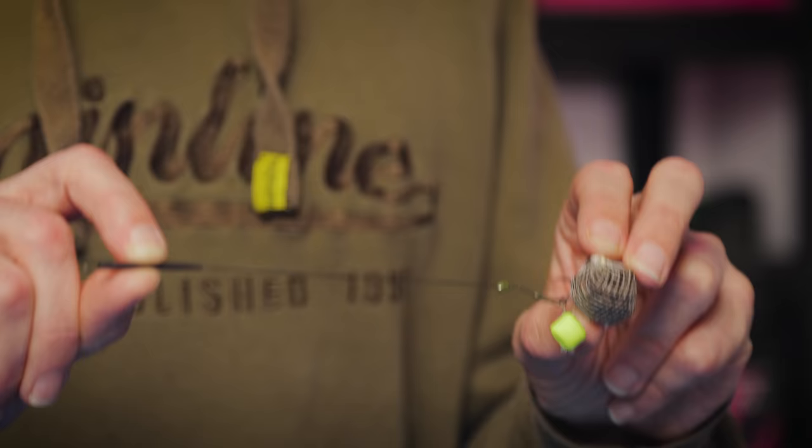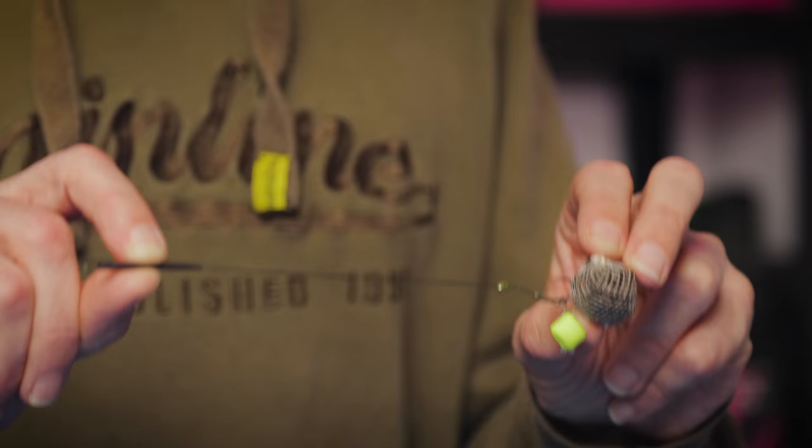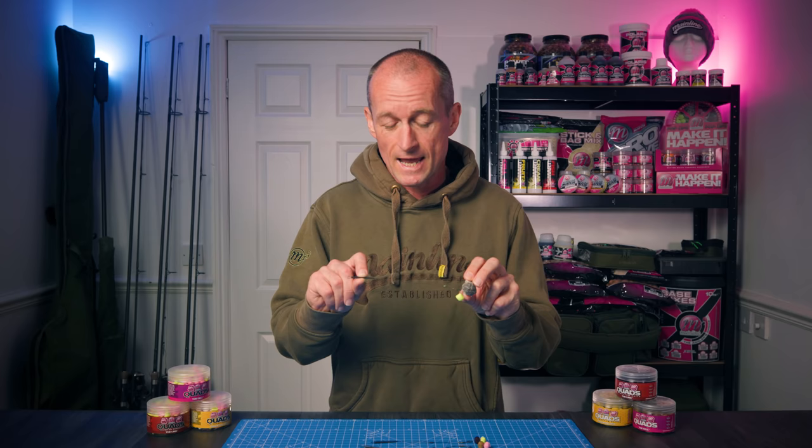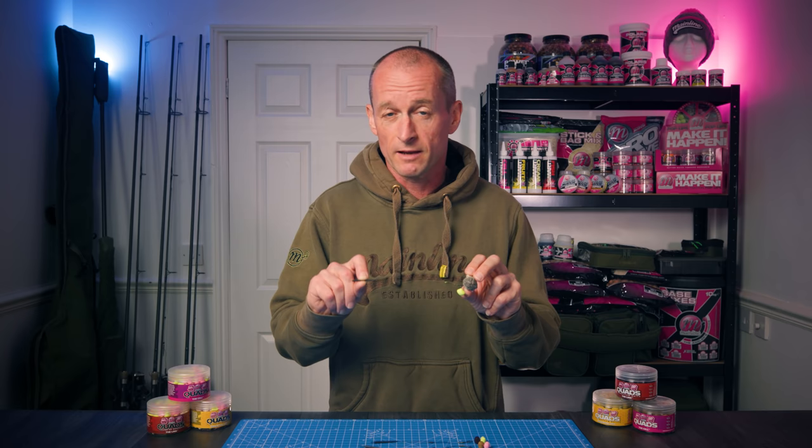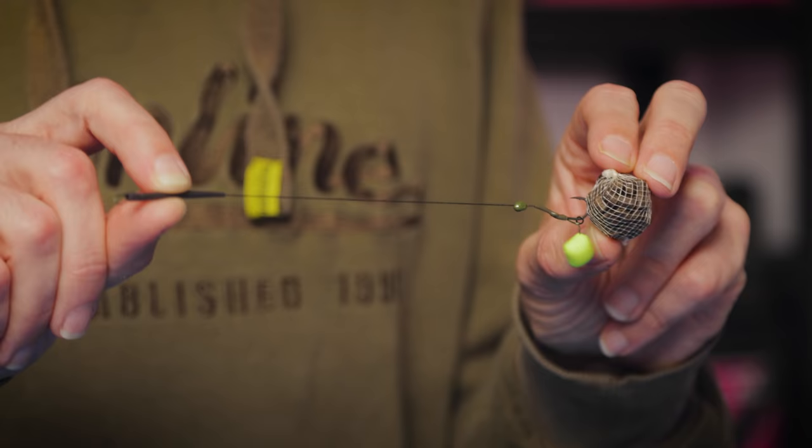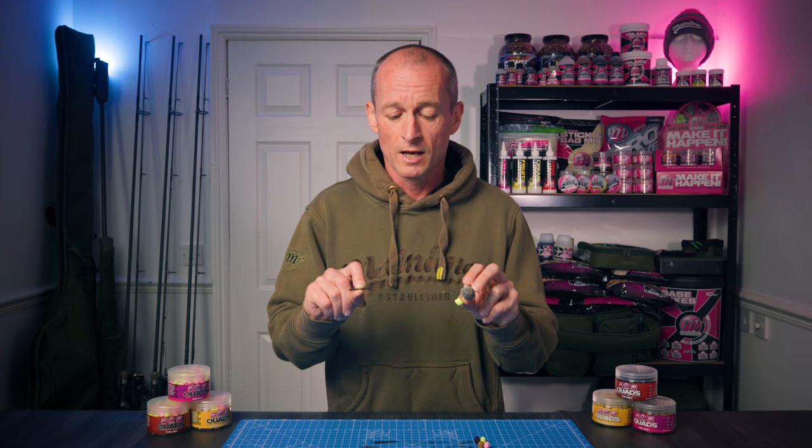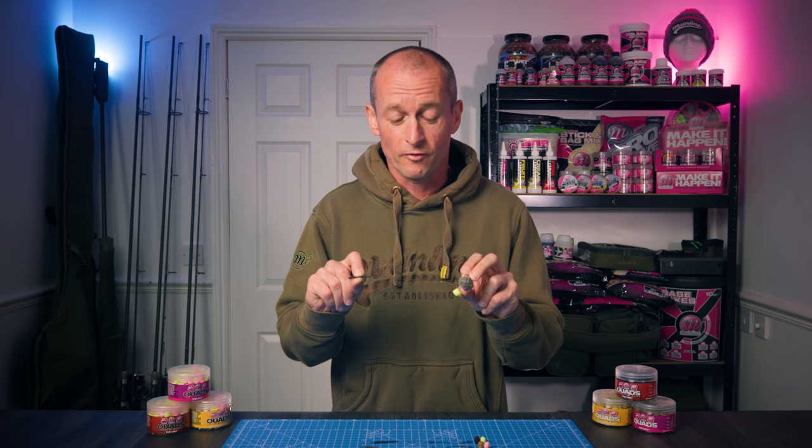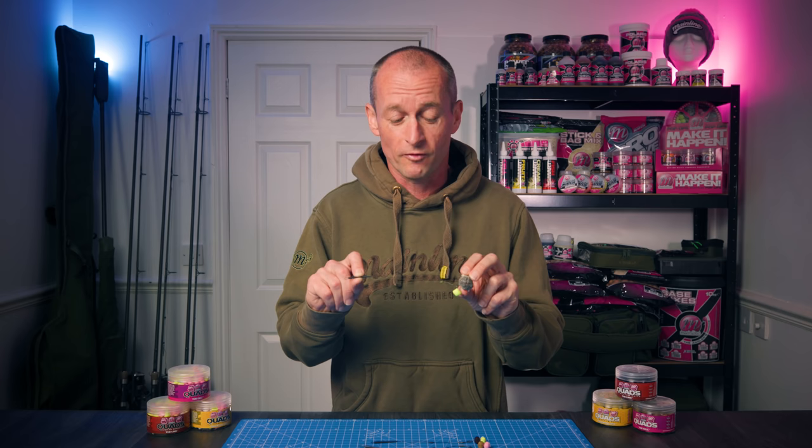So there you go, a really simple rig to present the pop-up quads. As I've said earlier, I've tied this rig to around about seven to eight inches long for using on conventional fishing spots. But if I was going to use this inside a solid PVA bag, which again I think this presentation is really going to lend itself well to, I'd probably maybe even halve the length of that, just a four or five inch hook link that would be tied straight to an inline lead.